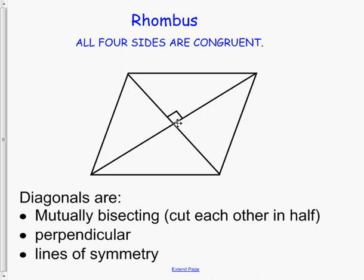The diagonals are also perpendicular, where they meet. This is a 90 degree angle. And they're mutually bisecting, which means this half... Here, let me grab my pen. This is the same as this, and that is the same as that.